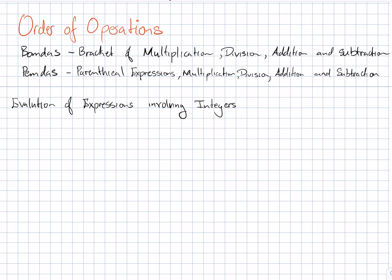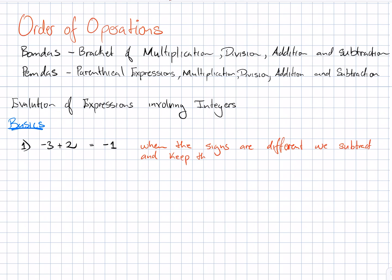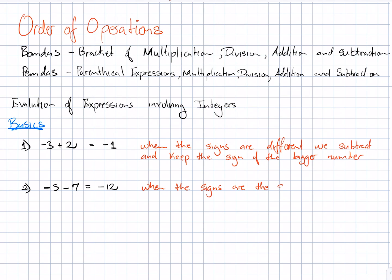Let's take some basic examples. Example 1: negative 3 plus 2 is equal to negative 1. When the signs are different, we subtract and keep the sign of the bigger number. Here, 3 minus 2 is 1, and the sign of the bigger number is negative, so the result is negative 1. Example 2: negative 5 minus 7 equals negative 12. When the signs are the same, we add and keep the sign. 5 plus 7 is 12, so keeping the sign gives negative 12.